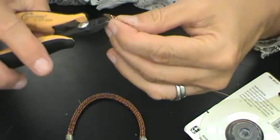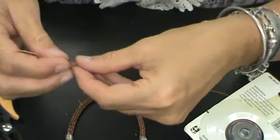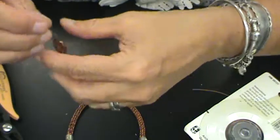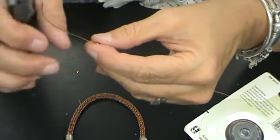Then I'm going to trim it. Again, make sure that you're covering that little piece of wire and then to add this on as a charm to this bracelet.